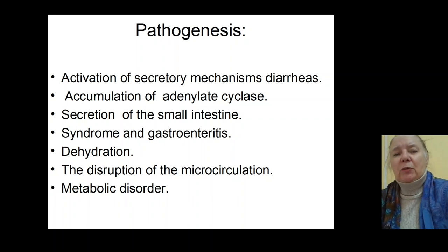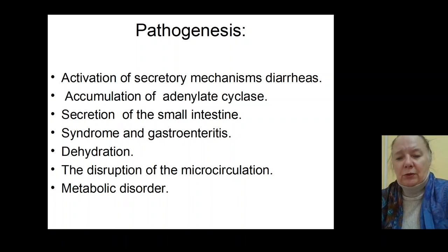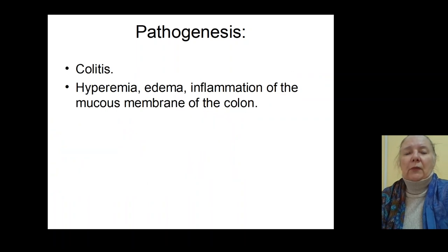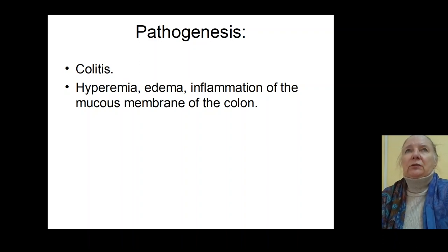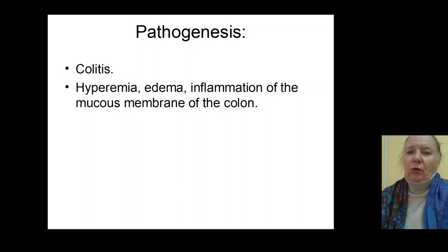In severe forms it causes formation of the syndrome of dehydration, sometimes dehydratory shock, disturbances of microcirculation, and metabolic disorders in the patient. Bacteria and endotoxins then penetrate to the large intestinal, causing spasm of muscles of the large intestinal and inflammation of the mucosa, forming the syndrome of colitis: tenesmus, mucus and blood admixtures in faeces, hyperemia, edema and inflammation of the mucous membrane of the large intestinal.